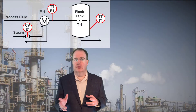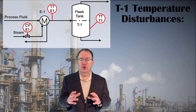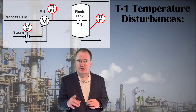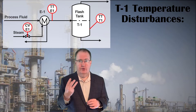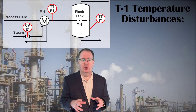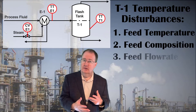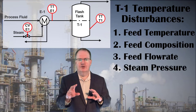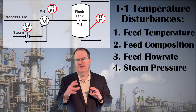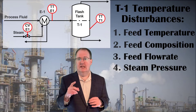Let's look at the control problem more closely. What changes would disturb T1's temperature, and therefore cause the composition of the bottom product to change? Four changes the controller would have to react to: the feed temperature, the feed composition, the feed flow rate, or the steam pressure. The interesting feature of each of these changes is that they would all affect both temperatures — the fast TT E1 as well as the slow TT T1.